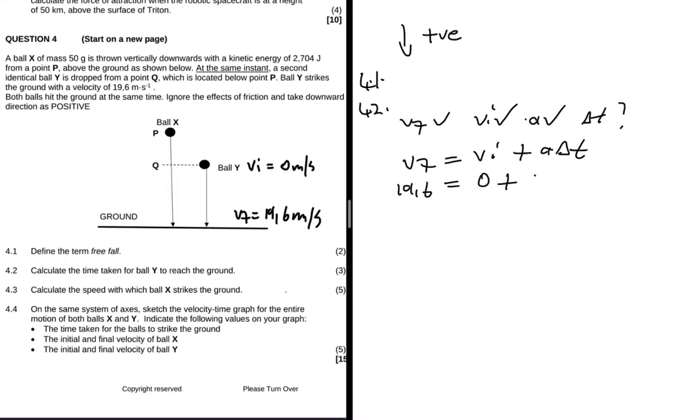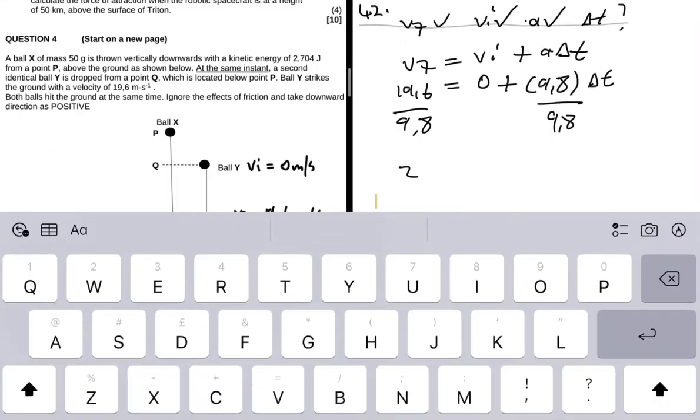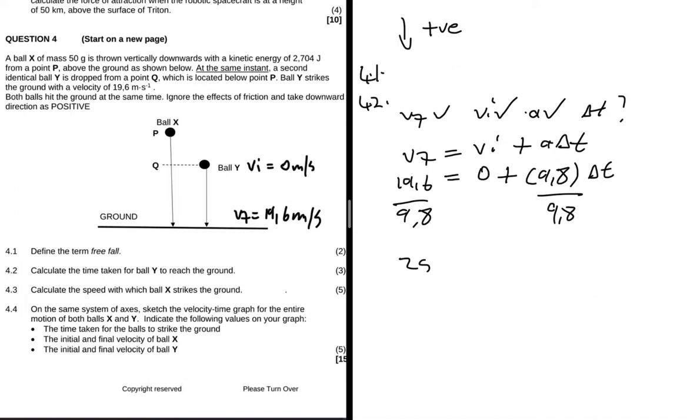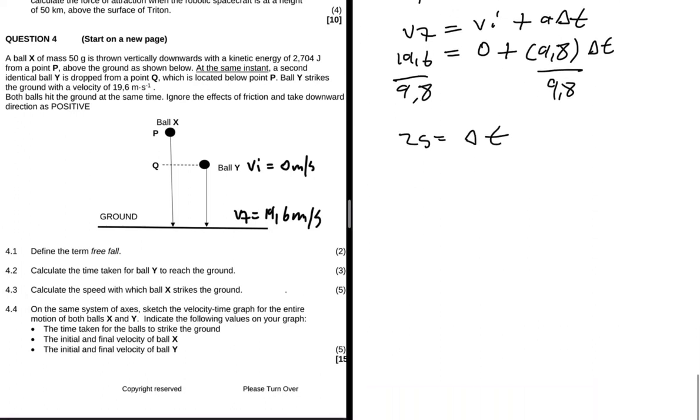Plus 9.8 because we're taking downward as positive, multiplied by delta t. So we divide both sides by 9.8. 19.6 divided by 9.8 is 2, so delta t equals 2 seconds. That's it for 4.2.